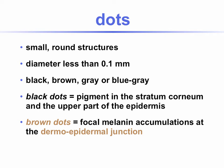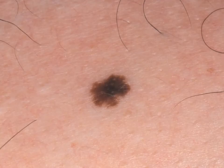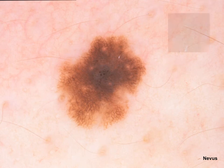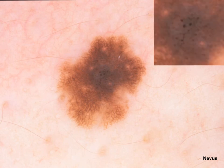Dots are small, round structures with a diameter of less than 0.1 mm. They are black, brown, gray, or blue-gray in color. Black dots correspond to pigment in the stratum corneum and the upper parts of the epidermis. Brown dots are focal melanin accumulations at the dermoepidermal junction. Clinically and dermoscopically, we see a regular pigment network in the periphery and, in the center, multiple tiny black dots — meaning melanin pigment in the stratum corneum and upper epidermis. At higher power, the small dots are clearly visible.